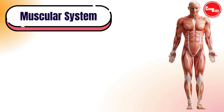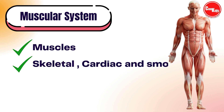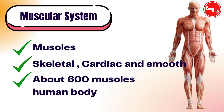Next comes the muscular system. It consists of the muscles in our body. There are three types of muscles: skeletal muscles, cardiac muscles, and smooth muscles. There are 600 muscles in our body.